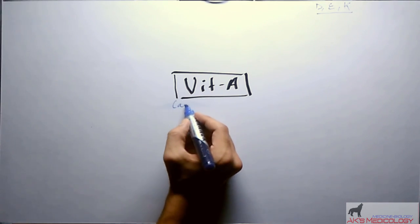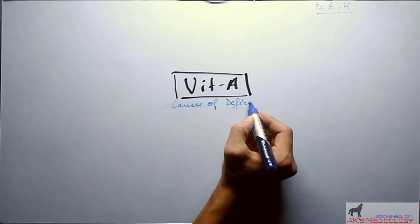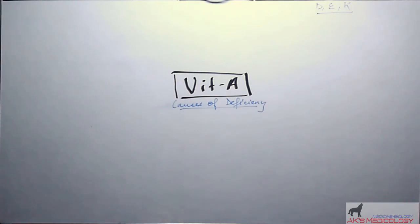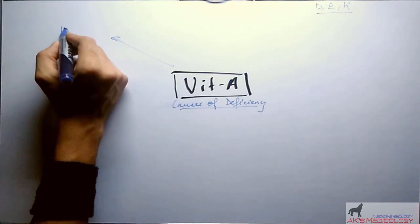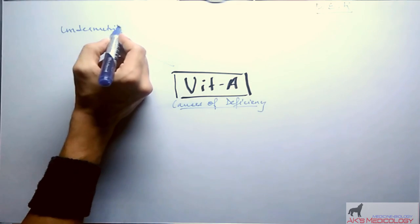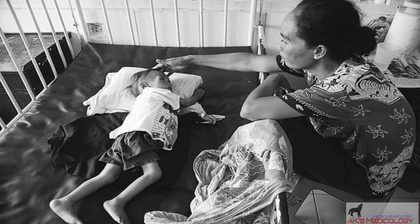Causes of deficiency of vitamin A are first, undernutrition or lack of nutrition which is generally seen in developing countries or because of poverty.